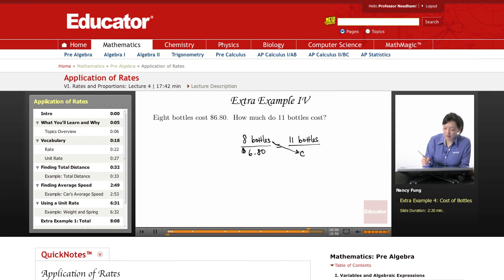So you can always solve a proportion by cross multiplying. 8C equals 6.80 times 11.